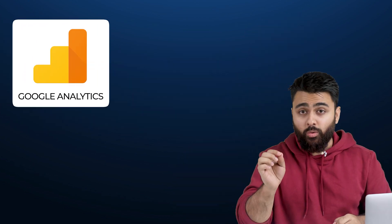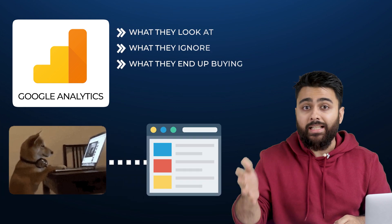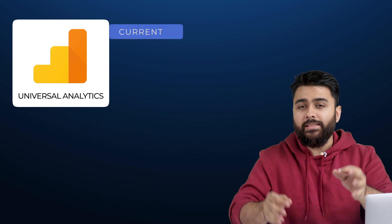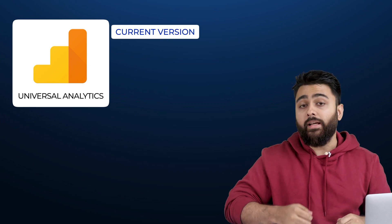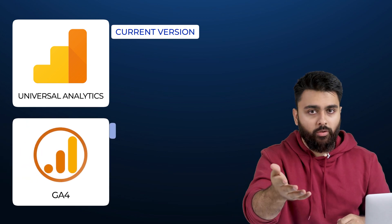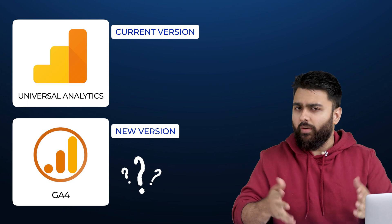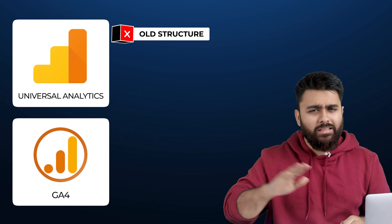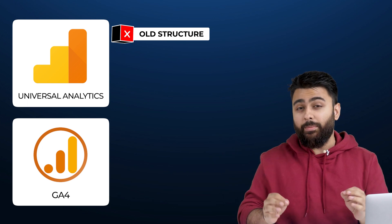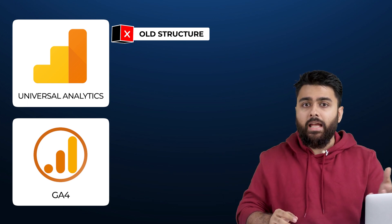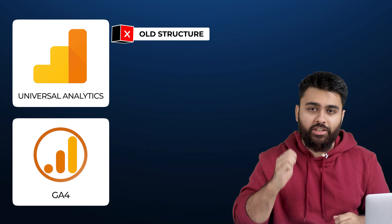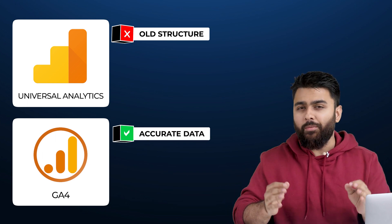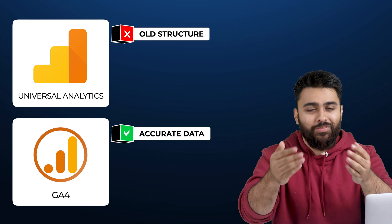Google Analytics is a tool to help you understand how visitors interact with your website. Universal Analytics, or UA, is the current version of this tool, while Google Analytics 4, or GA4, is the new version. Why do we need this new version? The base structure of UA was built years ago, and since then people have started using new devices and user behavior has been changing. Google created GA4 to keep up with these changes and provide more accurate and useful data to website owners.